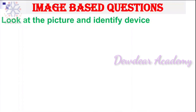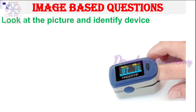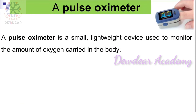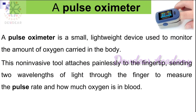Next question: look at the picture and identify the device. The answer is pulse oximeter. A pulse oximeter is a small, lightweight device used to monitor the amount of oxygen carried in the body. This non-invasive tool attaches painlessly to the fingertip, sending two wavelengths of light through the finger to measure the pulse rate and how much oxygen is in the blood.